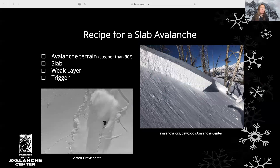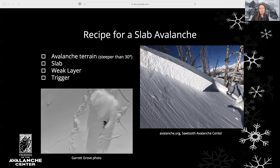For a slab avalanche, we need four components. First, we need avalanche terrain — a slope steep enough to slide. Next, we need a slab, or a harder, more cohesive layer of snow, on top of a weak layer, or a softer, unconsolidated layer of snow. Lastly, we need a trigger. Potential triggers include new snow, windblown snow, cornices falling, or humans. So we need to observe and understand snowpack — our slab and our weak layer — in order to safely manage terrain and ourselves.